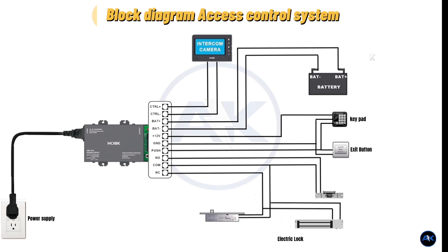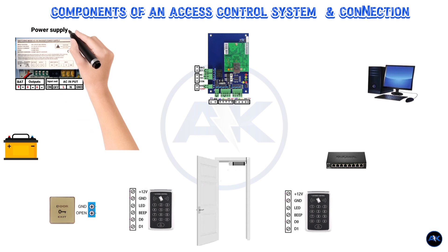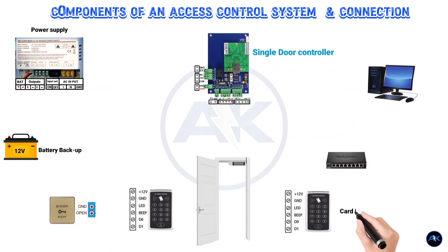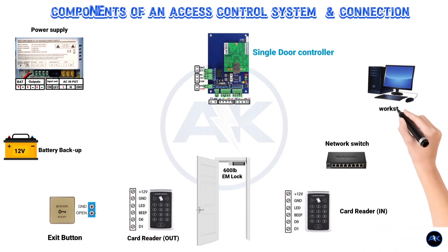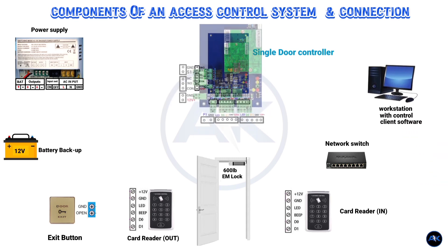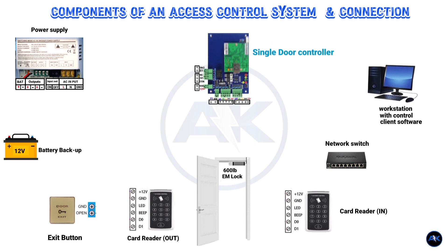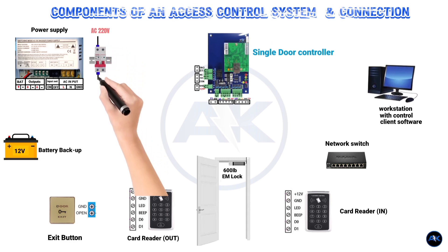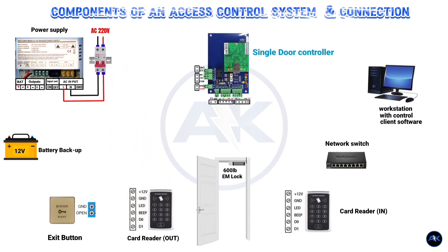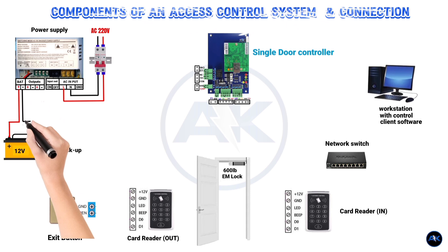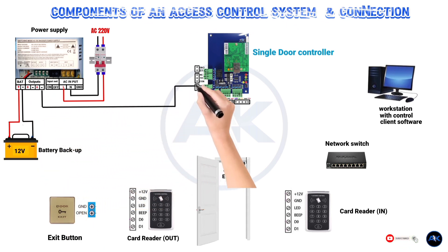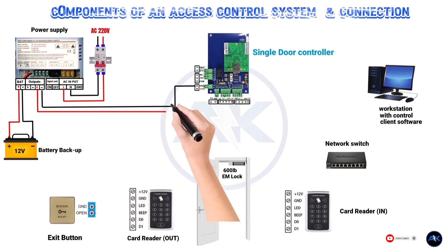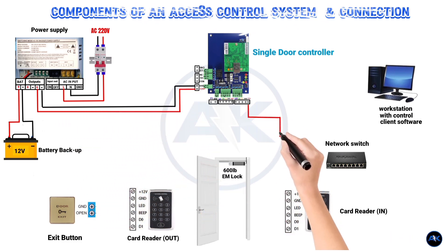It provides a clear overview of the wiring connections between these components, illustrating the flow of electrical signals and data throughout the system. Components of an Access Control System: An Access Control System is a security system that manages and controls access to a physical space or facility. It consists of various components that work together to provide a secure and effective access control solution. The Access Control Panel is the central control unit of the system. It is responsible for managing and processing all access requests, controlling the doors or gates, and communicating with other components. The panel is equipped with input and output ports to connect devices such as card readers, keypads, and electric locks.